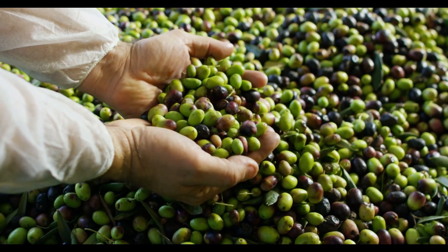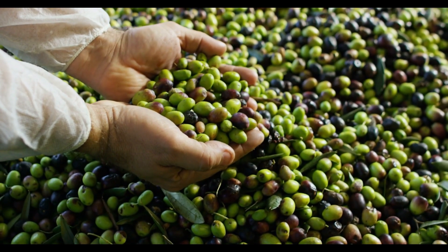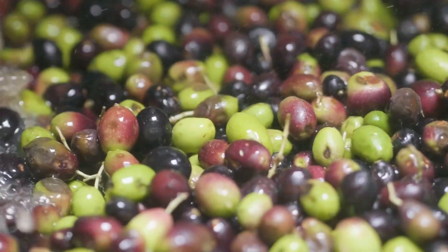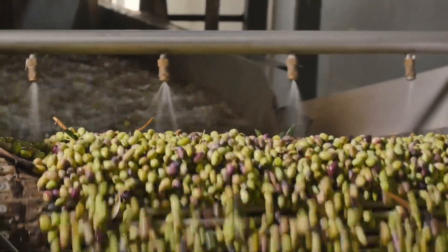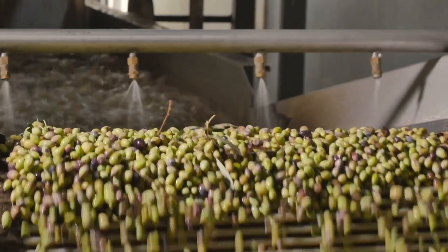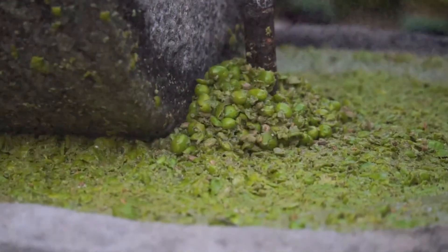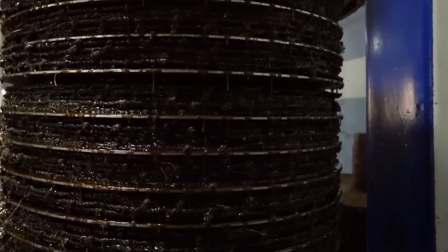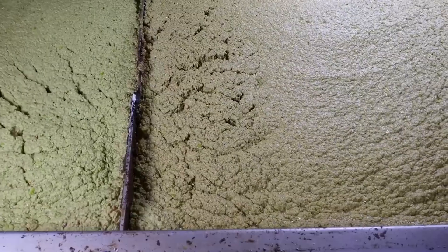Every minute counts, because oxidation can ruin the oil's quality and aroma. Before the magic happens, the olives need a good cleaning. Leaves, twigs, and dust are removed using vibrating screens and air blowers. Then comes the crush. Traditionally, stone mills—massive granite wheels—did the job. Slow but elegant, they pressed the fruit into a thick, aromatic paste.